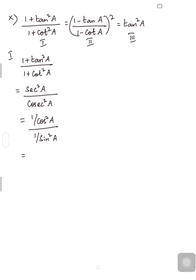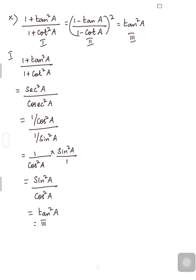Dividing a fraction by another fraction: the first fraction remains the same multiplied by the reciprocal of the second. So (1/cos²A) × (sin²A/1) = sin²A/cos²A, which is nothing but tan²A. This is the third part. So we have proved part 1 is equal to part 3.